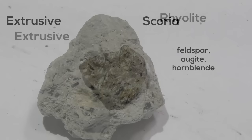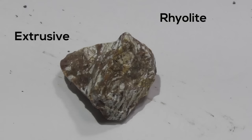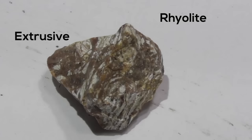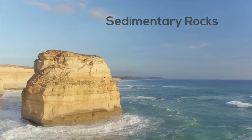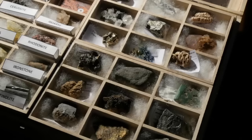And finally, we have rhyolite. It's an igneous extrusive rock. It's made from feldspar, quartz, and mica. It has a very fine texture, and often it has a porous texture, and it can float in water. So there we go — five igneous rocks.